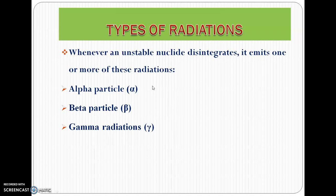When an unstable nucleus decays, what kind of radiations are radiated? The three kinds of radiations include the alpha particle, then we have a beta particle, and then we have gamma radiations. The symbols we use to denote these three types of radiations are indicated at the end of each radiation.